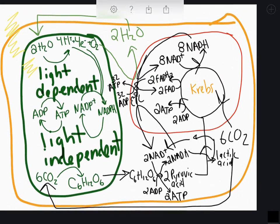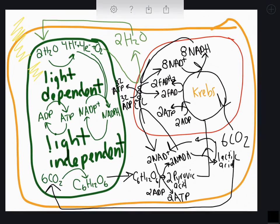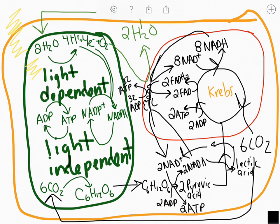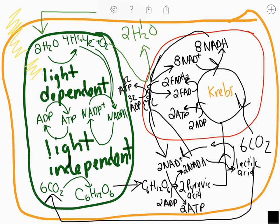Zooming out, we see both photosynthesis on the left and respiration on the right, with fermentation in the bottom far right. Here are all of the cell processes converting light energy into usable energy for cells to do chemical work and transport work.